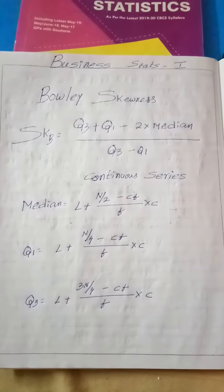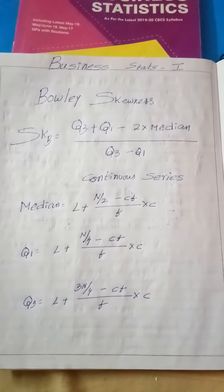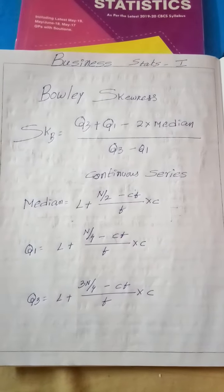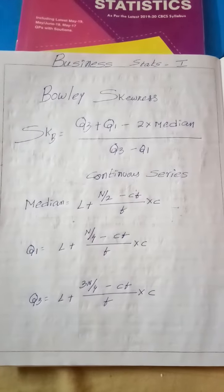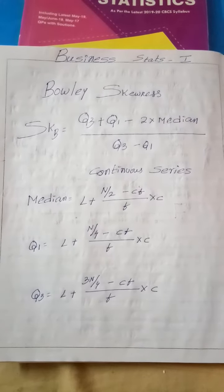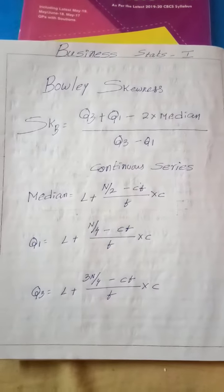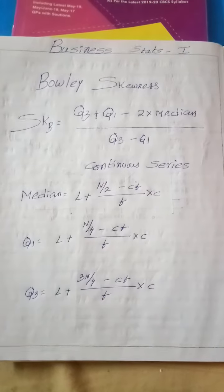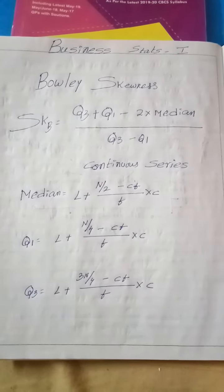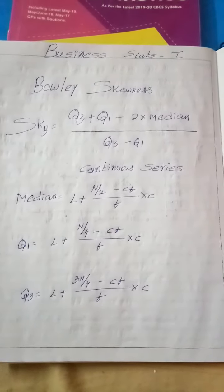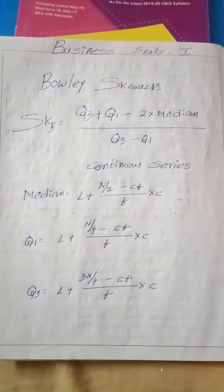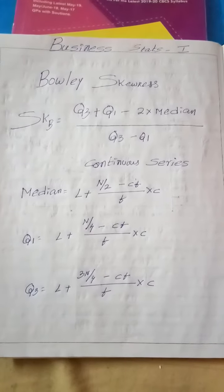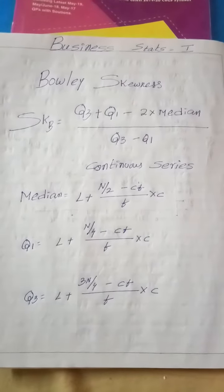My dear students, in B.Com second year third semester Business Statistics, we have a topic of skewness. Today in our video, let us see Bowley's coefficient of skewness. Here the formula is Q3 plus Q1 minus 2 into median, by Q3 minus Q1. Again, Q3 plus Q1 minus 2 into median, by Q3 minus Q1.